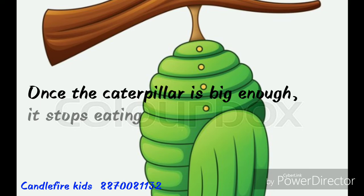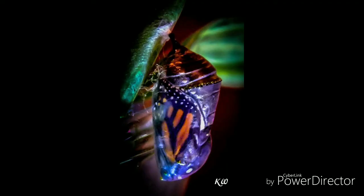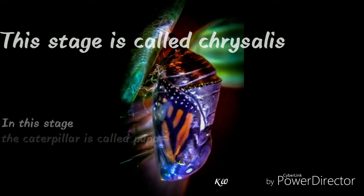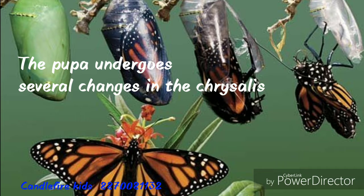Once the caterpillar is big enough, it stops eating. Then it forms a protective layer around itself. This stage is called chrysalis, and in this stage the caterpillar is called pupa. The pupa undergoes several changes inside the chrysalis.